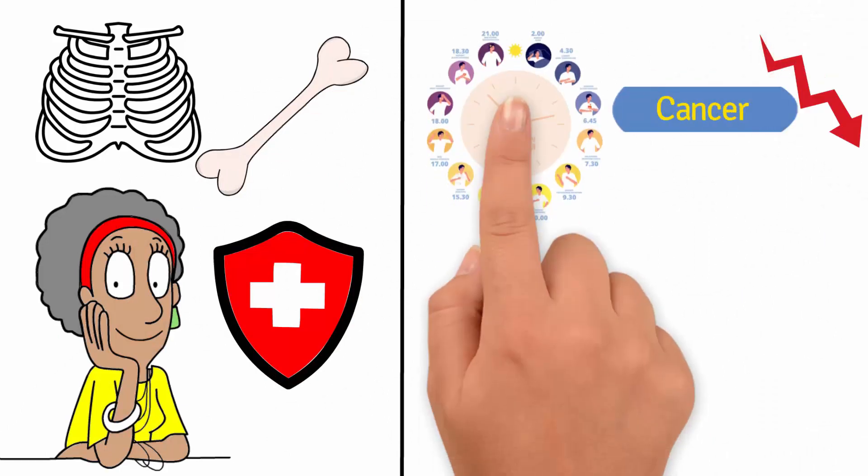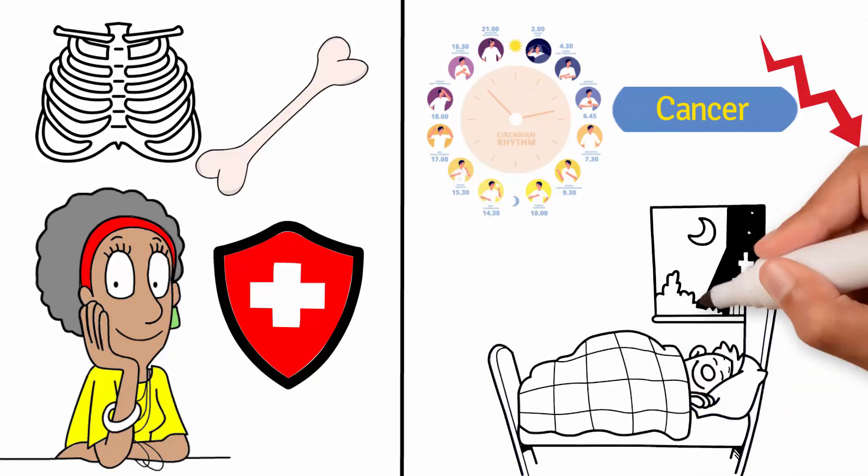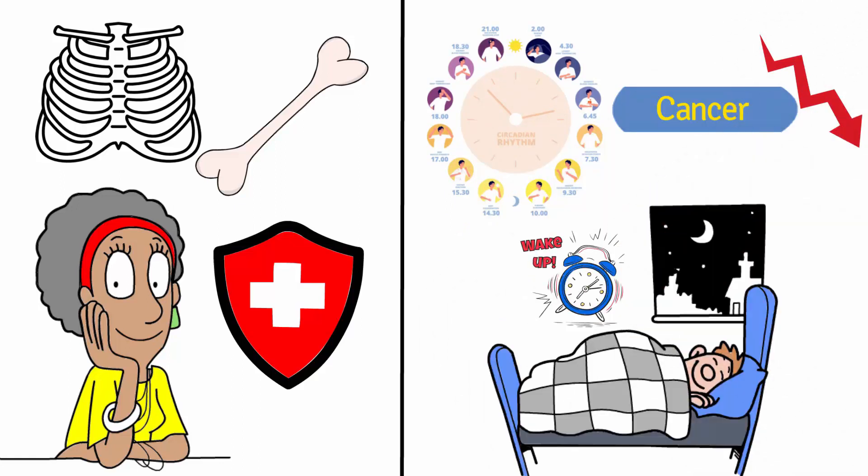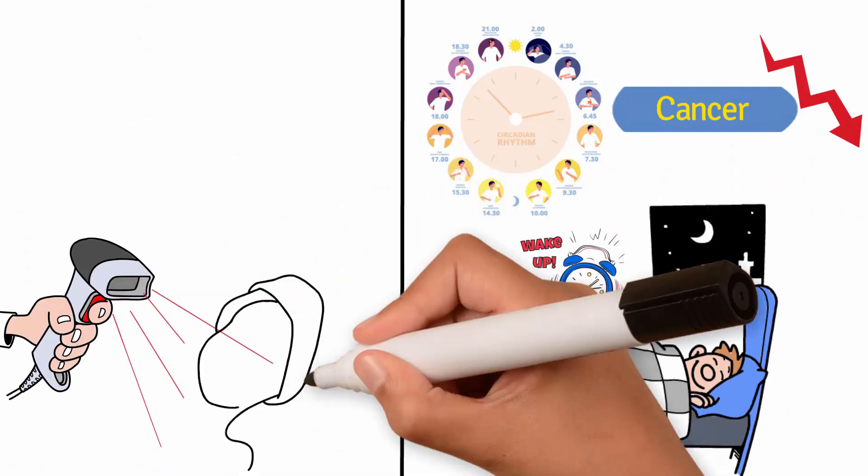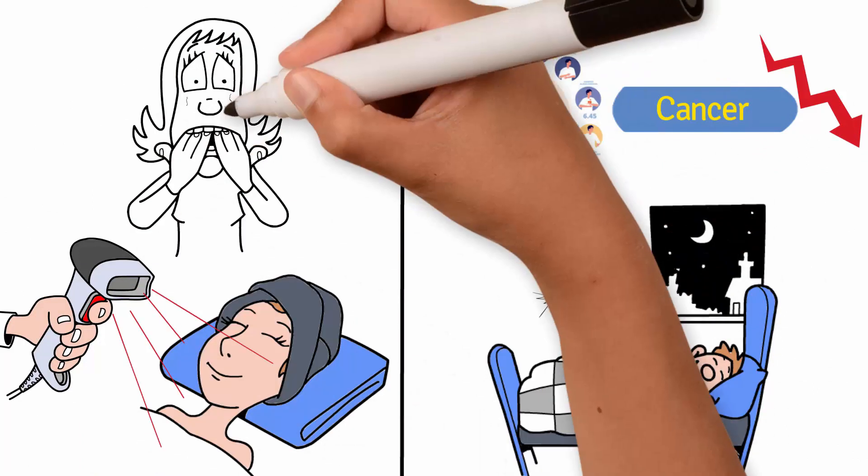UV and blue light regulates your circadian rhythm, your natural sleep cycle, and helps you sleep and wake up. Red light promotes wound healing and tissue repair, and also builds collagen to reduce wrinkles.